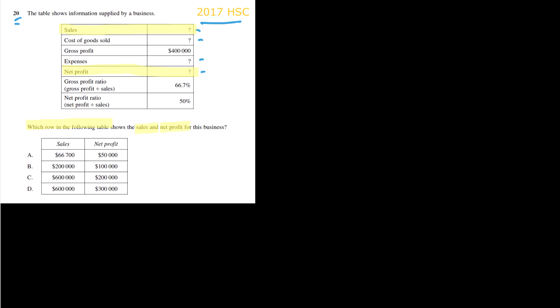Okay, so let's look at this question here. It's the 2017 HSC last question in the multis, 20. You can see here, we've got a series of financial information about a business and lots of missing categories. So what I've done is I've highlighted what we are looking for: which row in the following tables shows sales and net profit for this business. And we've got a bunch of options here. So we've got some figures we can work with. So we're trying to think about, I need to get to sales and I also need to get to net profit.